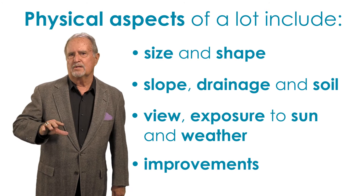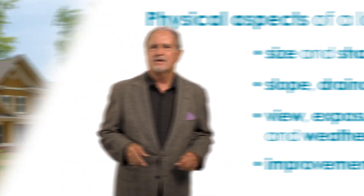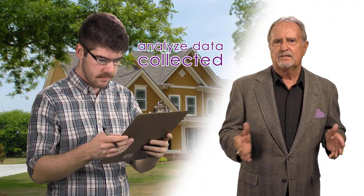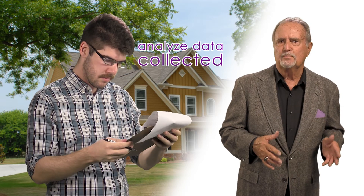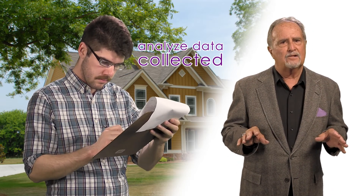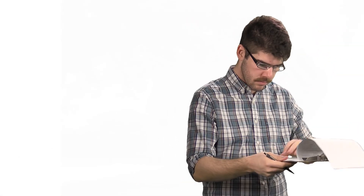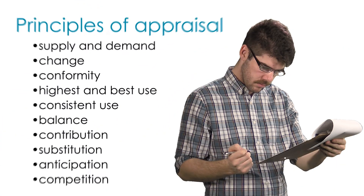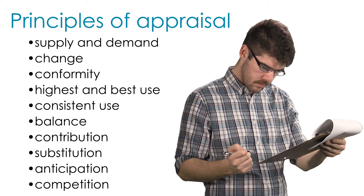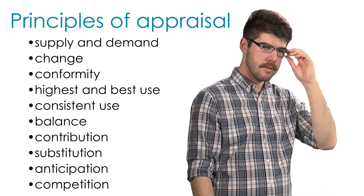Once the general and specific data have been gathered, including information about the lot, the third step in the appraisal process is to analyze the data collected. This is done by carefully studying the information gathered and determining what further research will be necessary. This analysis phase reflects on what we have learned in the prior section — remember DUST, PEGS, and the appraisal principles of value. If all the necessary research has been conducted, the appraiser is ready to move on to the fourth step of the process.